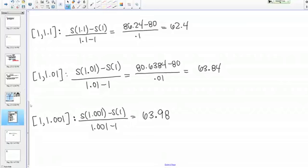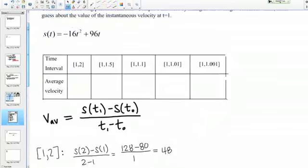Let me quickly put these in the table so you can see the trend. We had 48, 56, 62.4, 63.84, and 63.98.